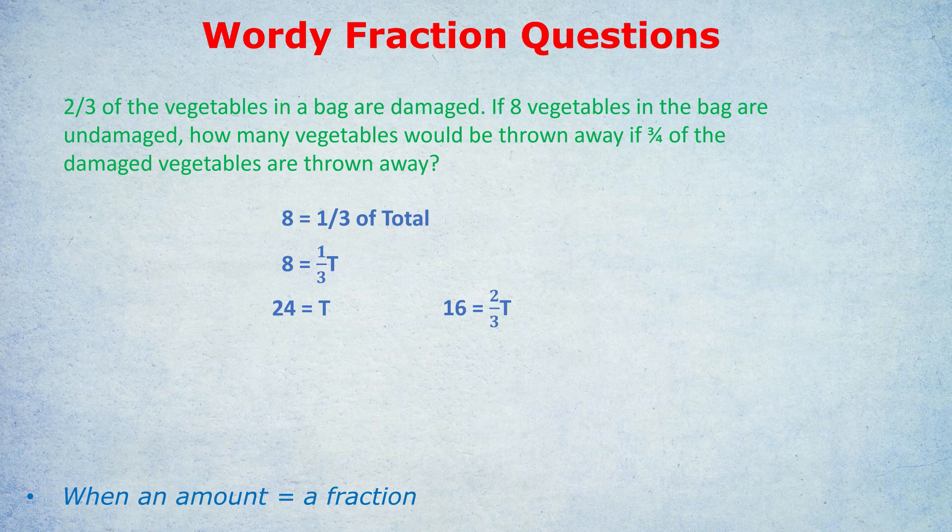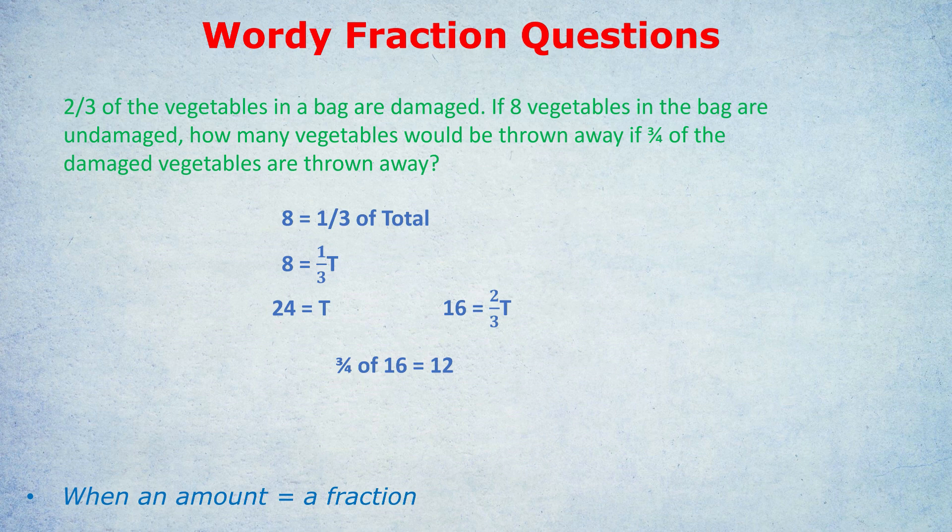Once we've worked out the total is 24, then we just work out two-thirds of that to deduce how many are damaged. Two-thirds of 24 is 16. So either way you do it, you work out that 16 were damaged. That's not the end of the question, though. As you might have noticed, it said three-quarters of the damaged vegetables are thrown away. So we work out three-quarters of 16. You can either do that in your head or divide by four, then times by three, and you get 12. So we had 12 vegetables being thrown away. But all of it came down to setting up that initial equation: eight equals a third of the total, making the amount equal a fraction.